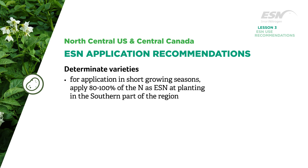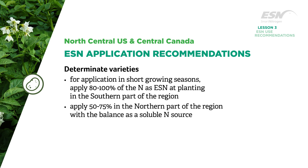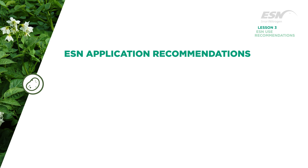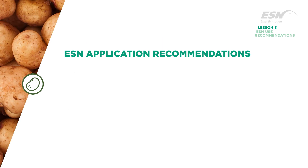In the North Central US and Central Canada, for determinate varieties in the northern part of the region, apply 50 to 75 percent of nitrogen as ESN at planting, with the balance as a soluble nitrogen source. In most cases, further nitrogen is not required.